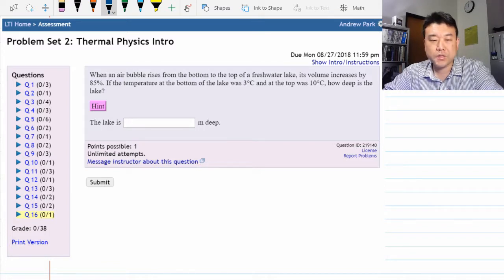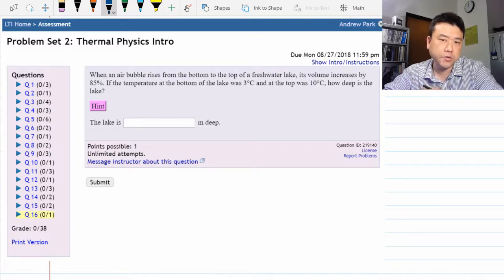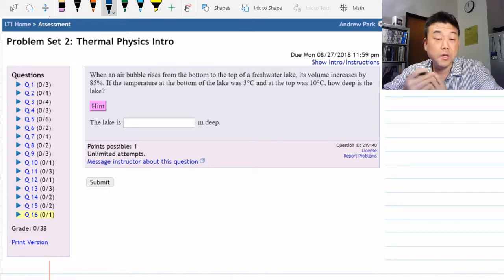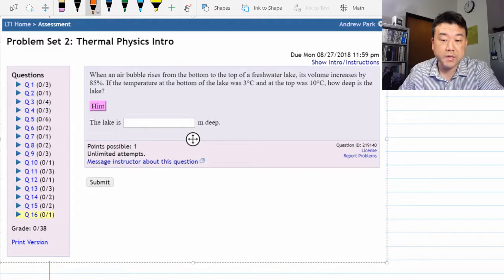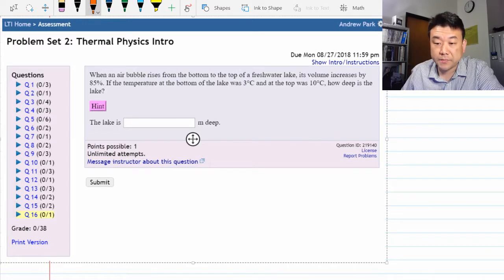It's the kind of question that we physicists like to ask because a question like this forces you to remember many different relationships in physics and use all of them in trying to answer the question that is asked: how deep is the lake?